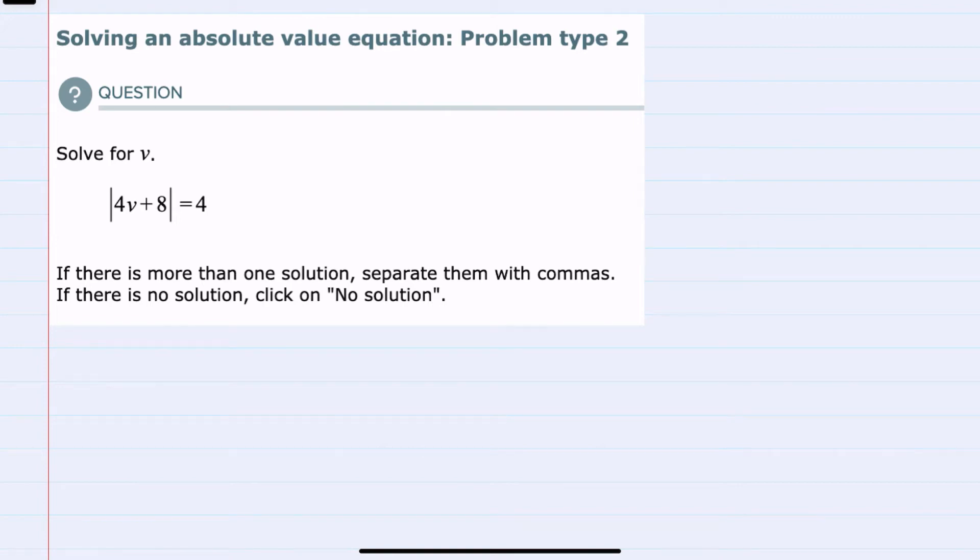Hello. In this video, I'll be helping you with the ALEKS problem type called solving an absolute value equation, problem type 2. We're asked to solve for v. Before moving on, we have an absolute value equals a number, so we need to check to see if there's no solution. Since the absolute value is equal to a positive, we should be able to solve the equation.